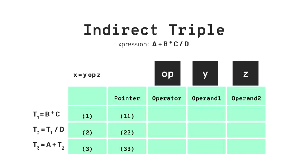We start by identifying operator and operand from the first line of three address code, which is t1 = b * c. Here the operator is star, operand1 is b, and operand2 is c.